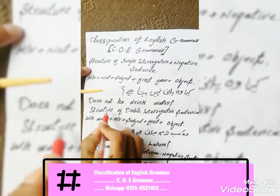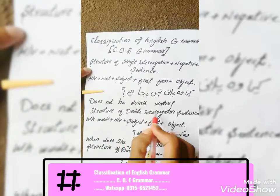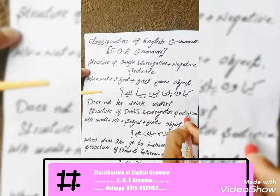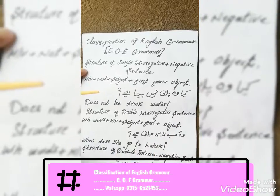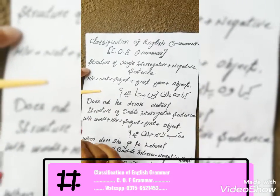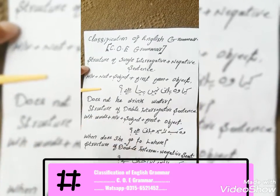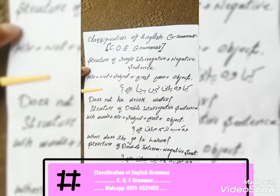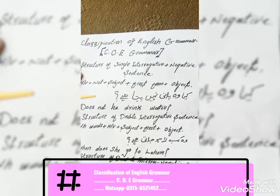Structure number five: structure of a double interrogative sentence. A double interrogative sentence is a sentence in which a WH-word is used along with a helping verb.